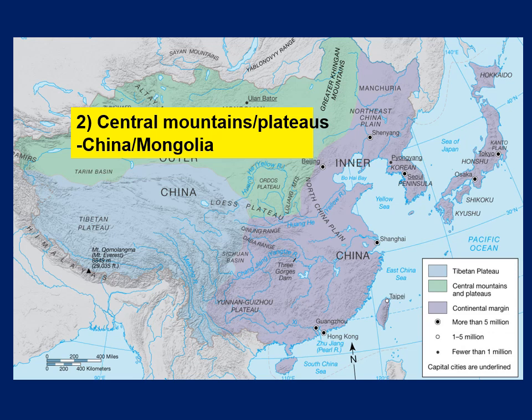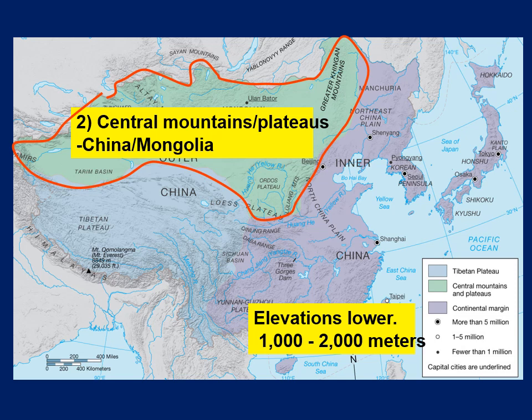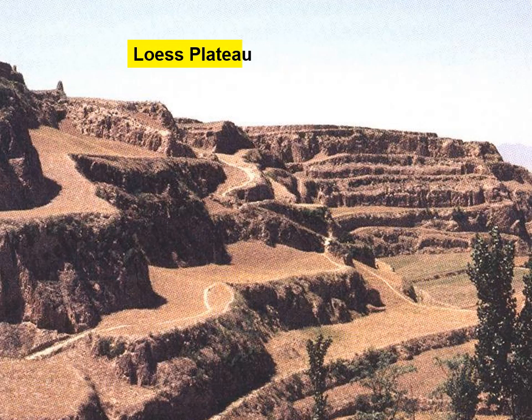The central mountains and plateaus region includes both China and Mongolia. Elevations here are lower than on the Tibetan Plateau — about 1,000 to 2,000 meters. In this area we also find the Loess Plateau. Loess — spelled L-O-E-S-S — is a geologic term meaning fine, wind-blown sediment: fine sand that has been eroded from the Tibetan Plateau and the Himalayan Mountains and deposited there.